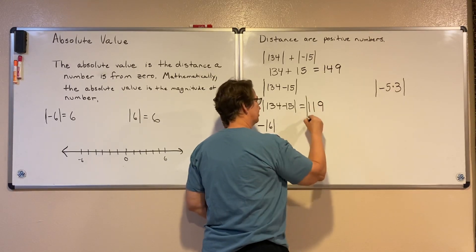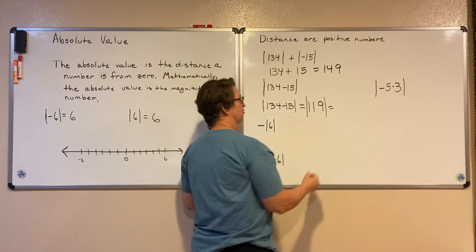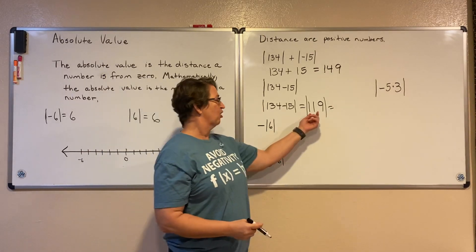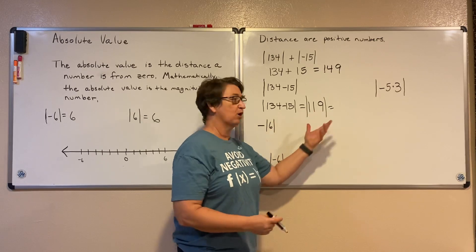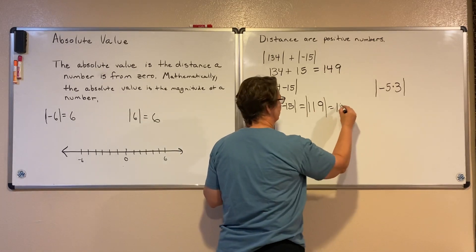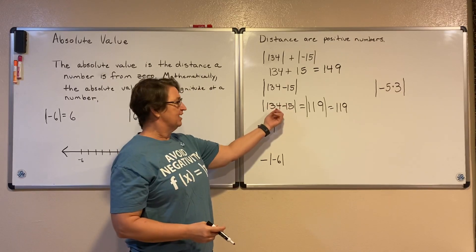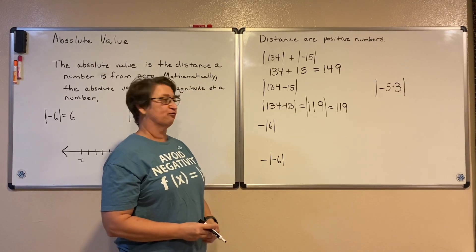And we still need to know the absolute value of that. Well, the absolute value of 119, how far away is 119 from zero? It's 119 units. So notice that we do what's inside that absolute value symbol first.